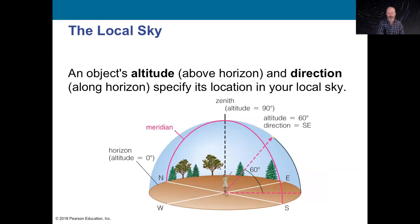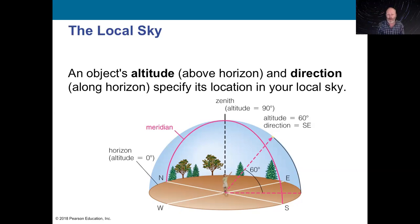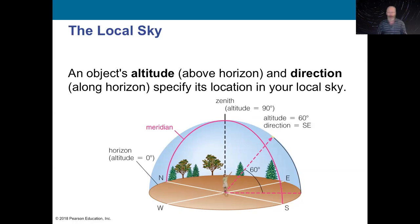Wherever you are on the planet, the local sky always has an altitude — how high up things are. If something is right on the horizon, we say it's at zero degrees. If it's directly overhead, it's at 90 degrees. That right angle is everywhere around us. The 90 degrees directly overhead is called the zenith. Wherever you are, the zenith moves with you.